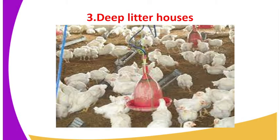The third type of house is the deep litter system. In the deep litter system, the birds are confined in a structure 24/7, meaning that they are not supposed to get out of that structure. Therefore, they are supposed to be provided with feeders, feed, and water.